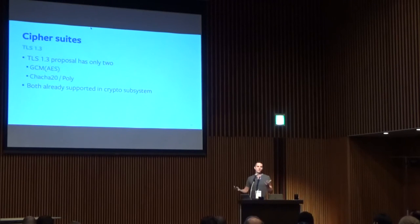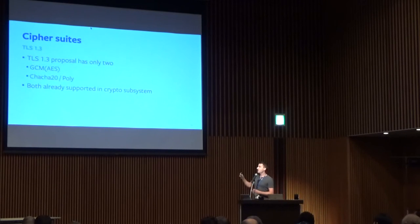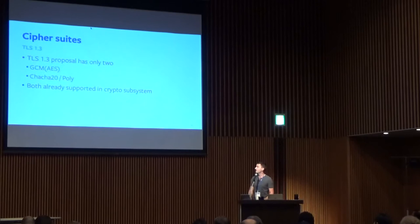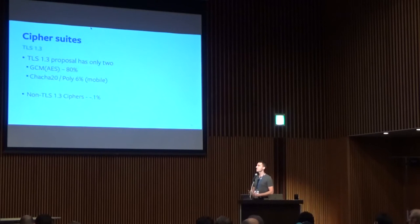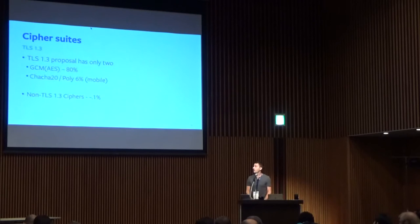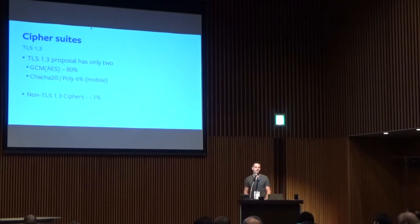For our use cases, this mostly means mobile applications we have control over end up using ChaCha Poly, while all of our server backends use GCM AES. So you can make this trade-off of which end is going to spend the extra CPU cycles. Both of these are already in the crypto subsystem. GCM AES required a few changes I'll talk about, but it works quite well for us. GCM AES makes up about 80% of our encrypted traffic, so it's quite high. ChaCha Poly from mobile is about 6%, and the older pre-1.3 ciphers that are going away is only 0.1% at this time and going down.